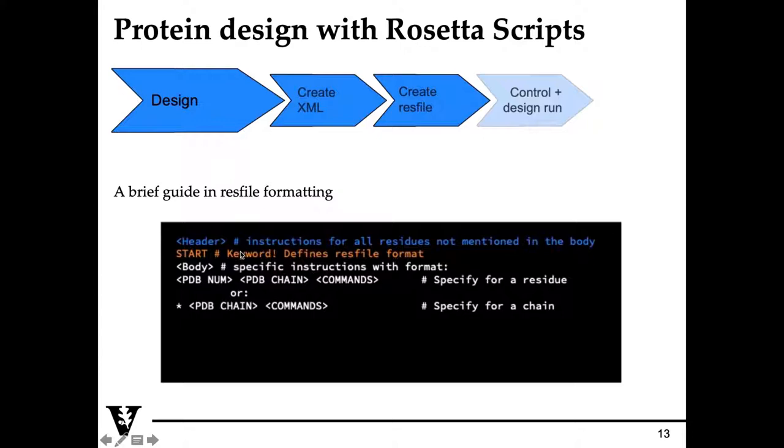To get a better understanding of how the res file is structured, you can have this optional header. Then you must always include 'start' or else Rosetta will not know how to read in your res file. This is very important to include. Afterwards, you can include a list of commands that specifies which residues and chains to act upon accordingly in design.